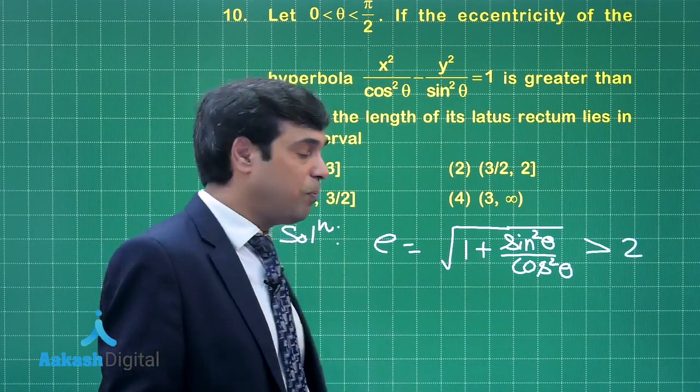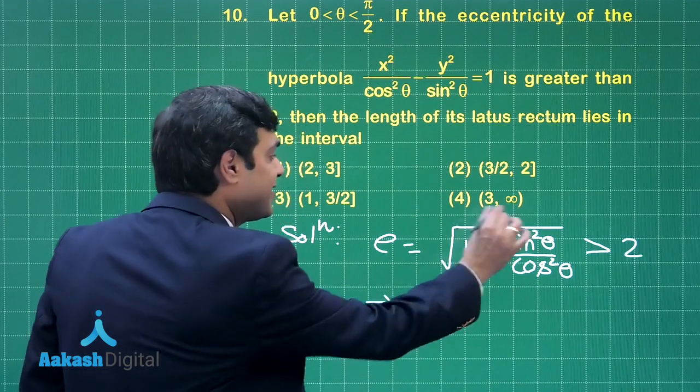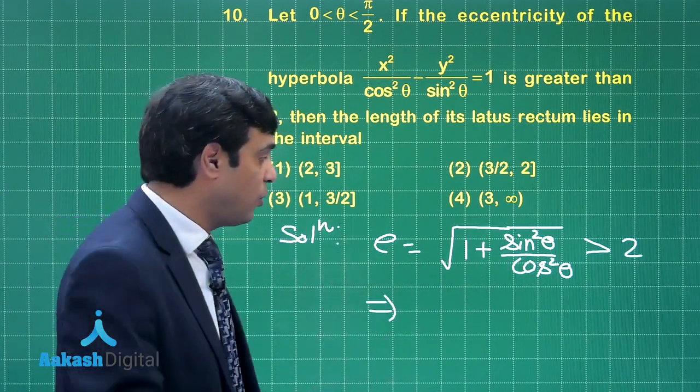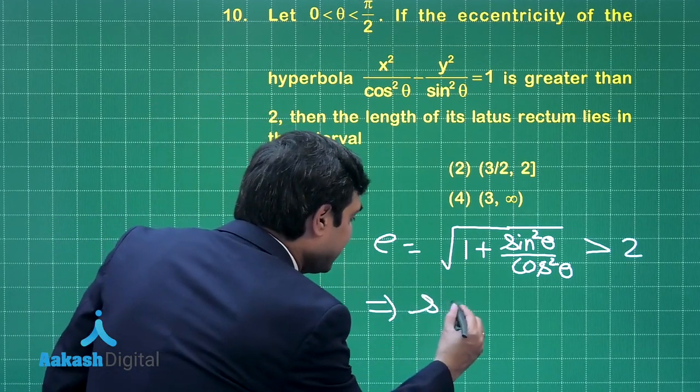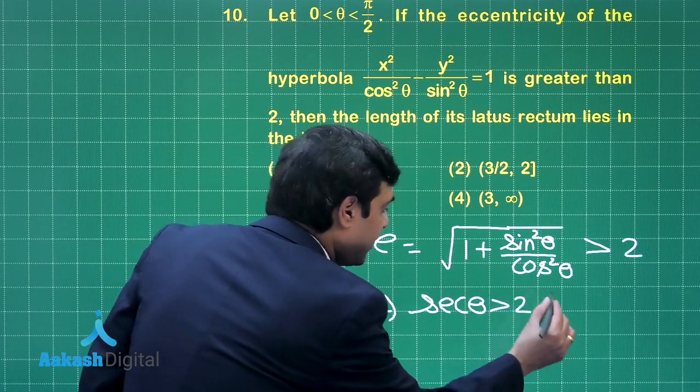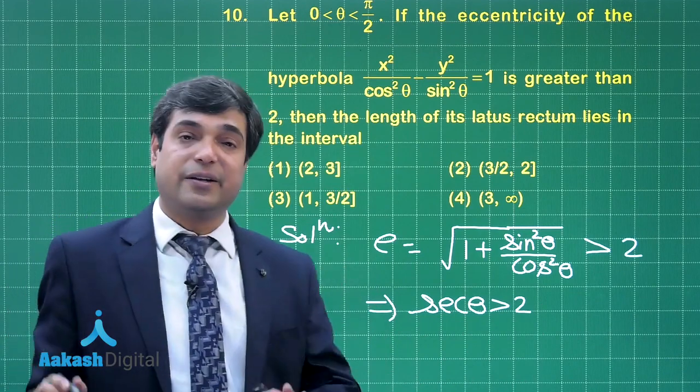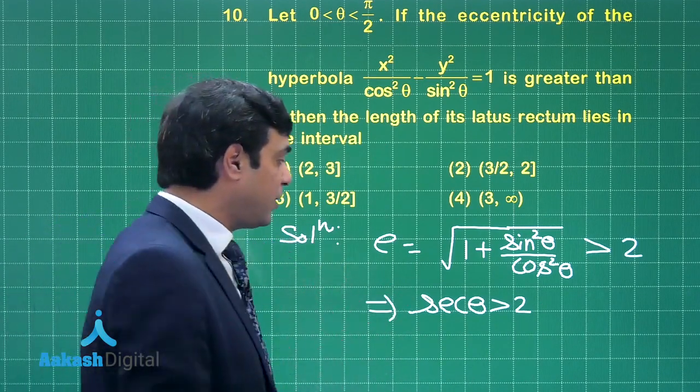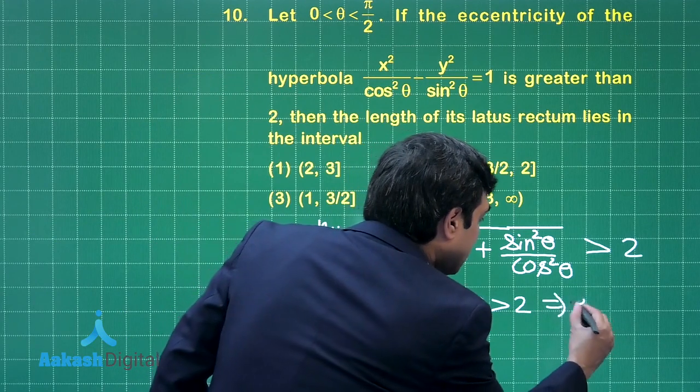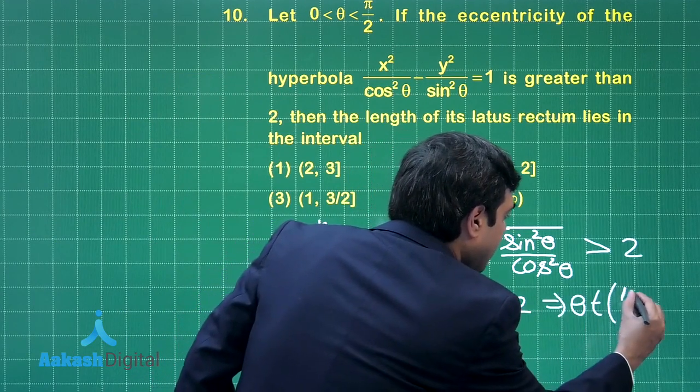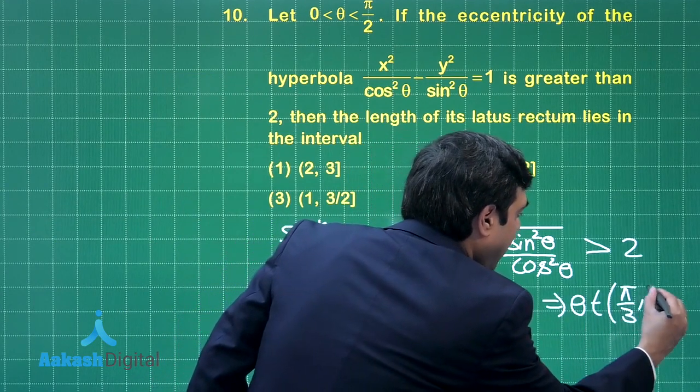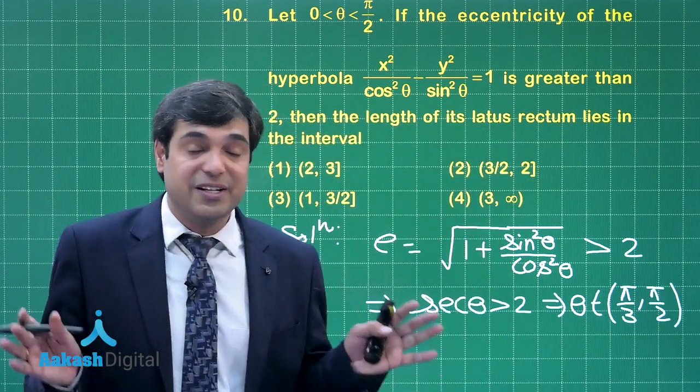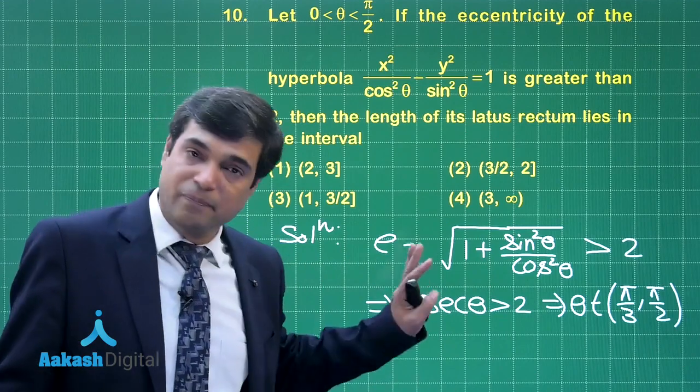Theta is in the interval 0 to π/2, so clearly this term sec²θ, its square root will come out as positive sec θ only. So we have sec θ > 2. Sec θ > 2 meaning the interval for theta is π/3 to π/2. We have the conclusion theta lies in the interval π/3 to π/2.